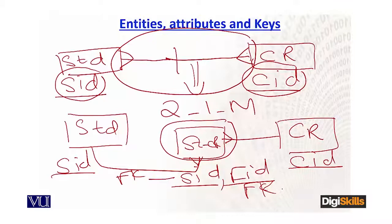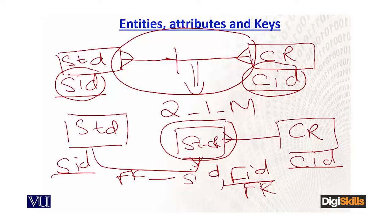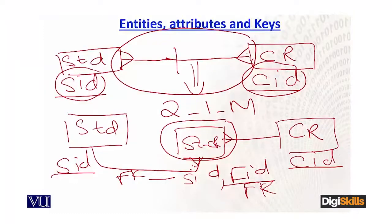One thing to keep in mind: in the many-to-many intersection table, whether you make the foreign keys part of a composite primary key or not — there is no strict rule. If you want to make them part of the composite key, underline them; if not, just leave it. Both are acceptable. Any DBMS like MySQL or Oracle will not stop you either way. It depends on your requirements. But the mandatory rule is: in the case of many-to-many, you must introduce a third intersection table to resolve it.